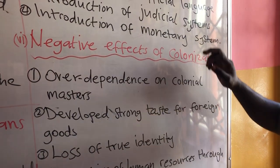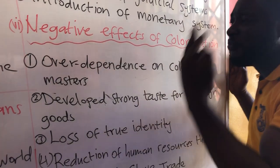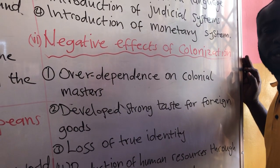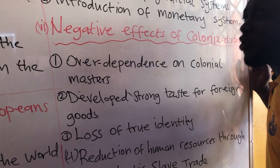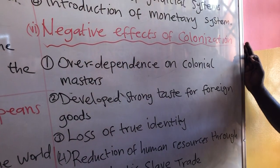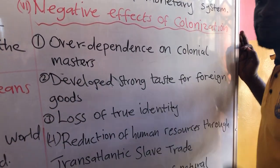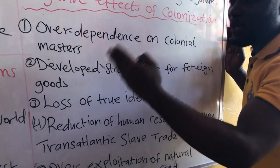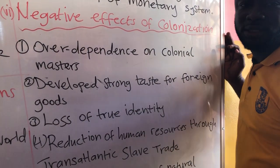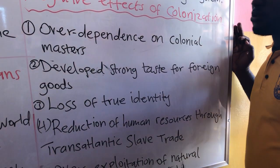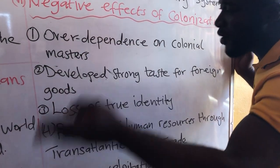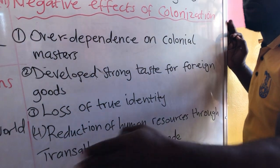Colonization also had negative effects — how colonization retarded development in the Gold Coast. One negative effect is over-dependence on colonial masters. Any time there is a budget, the government has to go to the developed countries — our colonial masters — to seek support for our budget. So indirectly, we are still being colonized. We are still depending on our colonial masters, and Ghana has joined what is called the Commonwealth of Nations.